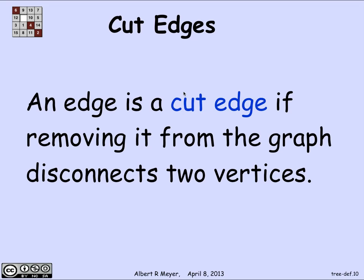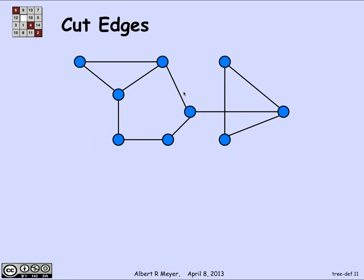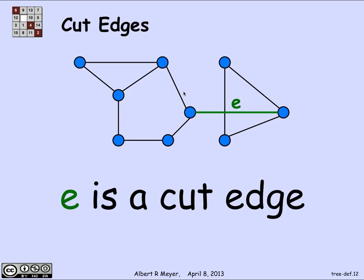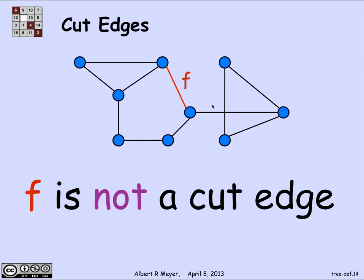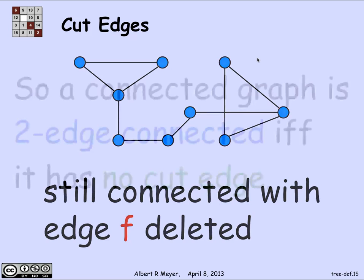An edge in a simple graph is called a cut edge if, when you remove it from the graph, two vertices that used to be connected cease to have a path between them. In the illustration, edge E is a cut edge because deleting it creates two components — vertices that were connected via E are no longer connected. Edge F is not a cut edge because even after deleting F, there is still a path from every vertex to every other vertex; it doesn't disconnect anything.